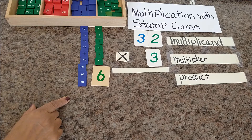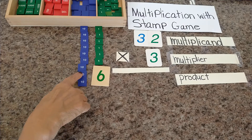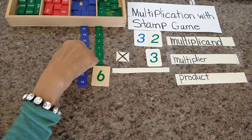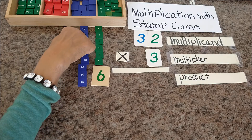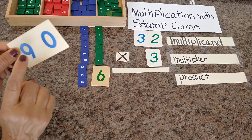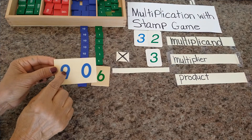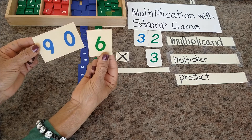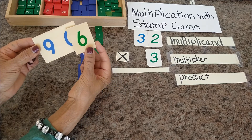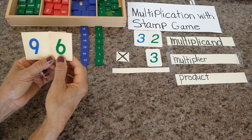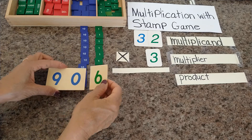Let's see how many tens we have: one ten, two tens, three tens, four tens, five tens, six tens, seven tens, eight tens, nine tens. Nine tens make ninety. So I'm going to put six units on the units place. Now we have ninety-six. This is our product.